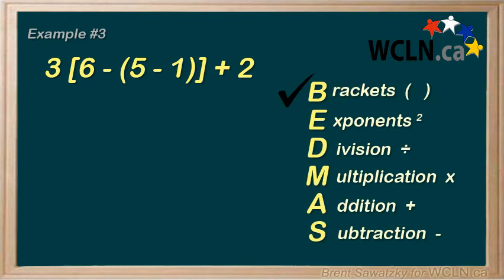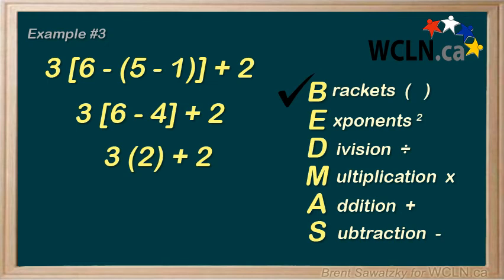Now, if we start off with BEDMAS with brackets, one thing we can note is that we always start with the innermost set of brackets. So, in this case, the innermost set of brackets is the 5 minus 1. So, our first step of dealing with brackets is to clean up the 5 minus 1 is 4. So, everything else remains the same. Now, we're on our second step of the B for brackets. That is to clean up the outermost set of brackets, 6 minus 4.